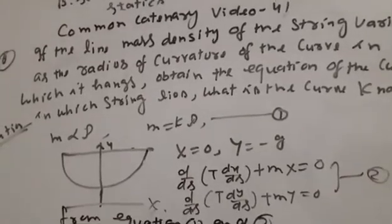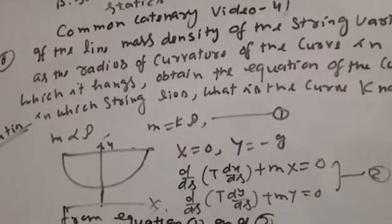M is proportional to density, and rho is proportional to curvature, so M is equal to k times rho.